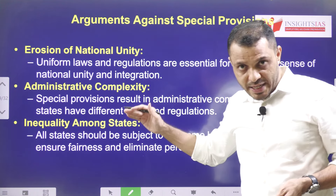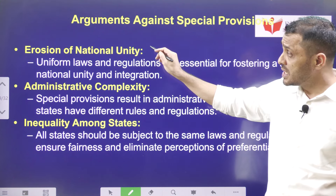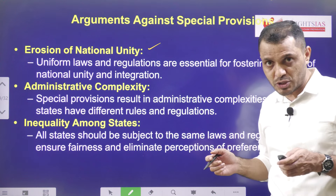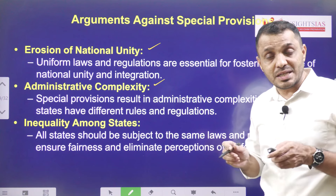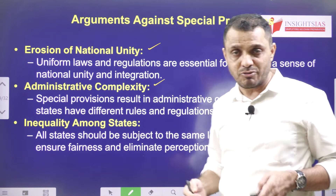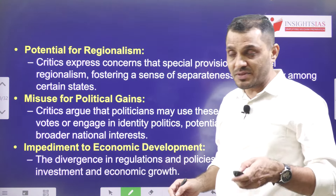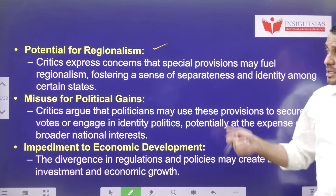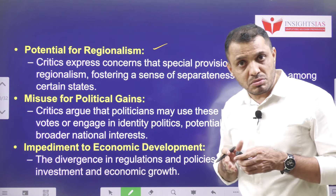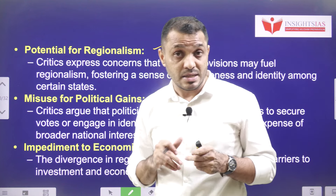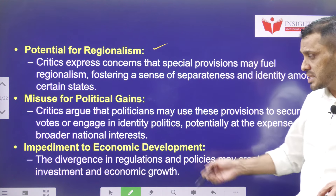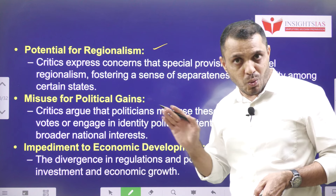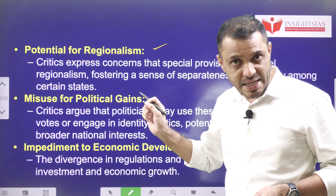Arguments against special status: First, it is harmful to national unity because uniform laws are not applicable. Second, administrative complexity arises when different areas have different laws. Third, inequality among states and encouraging regionalism due to excessive separatedness. Fourth, political parties may misuse it — even when certain regions don't require special status, parties may demand it for political gains. Fifth, it may also stop economic development, as seen with Article 35-A in Jammu & Kashmir.